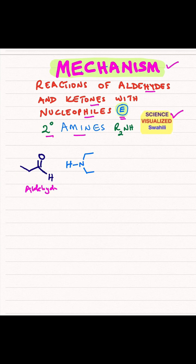We are reacting that with a secondary amine. This is an amine, and if you look at the nitrogen, it has one alkyl group and a second alkyl group — two alkyl groups total — and that makes it a secondary amine.